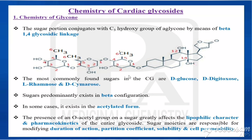The common sugars used in cardiac glycosides are D-glucose, D-digitoxose, L-rhamnose, and D-cymarose. These sugars predominantly exist in beta configuration. In some cases they exist in acetylated form. The presence of an O-acetyl group on a sugar greatly affects the lipophilic character and pharmacokinetics of the entire glycoside. The sugar is responsible for modifying duration of action, partition coefficient, solubility, and cell permeability.